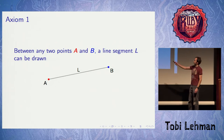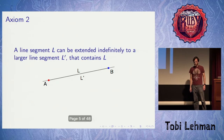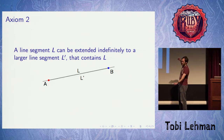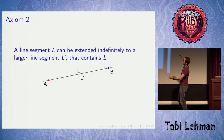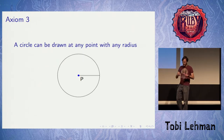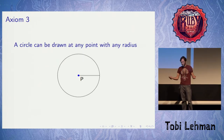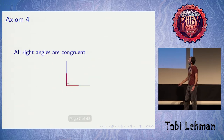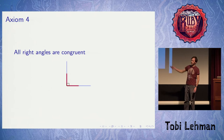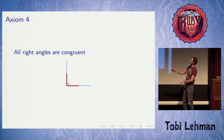The first axiom says that between any two points A and B, a line segment L can be drawn. Axiom 2 states that given any line segment, you can extend that line segment indefinitely and just get a larger line segment that contains the original one. The third is that a circle can be drawn at any point with any radius. The fourth is that all right angles are congruent, which is like an equivalence relation — given any two right angles, you can always line them up.